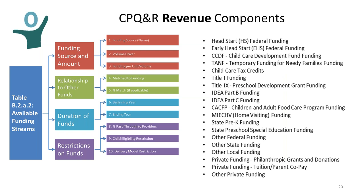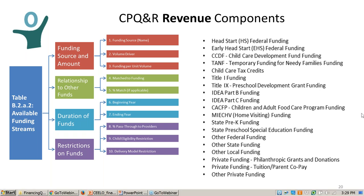A new feature of the CPQ&R is the revenue side. The tool allows users to look at revenue in a common format, even though funding sources typically have unique funding formulas and separate restrictions and eligibility requirements. As Steve mentioned, it's crucial when multiple funding streams are blended or braided to know how to look at them in a common manner. The CPQ&R contains a number of data tables summarizing state-level funding for different sources. Users can refer to this list as a first step in brainstorming which sources to consider in building their model.